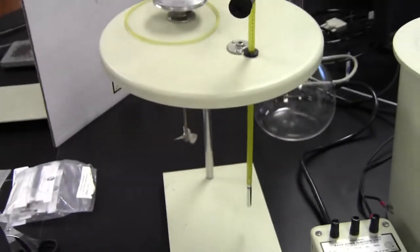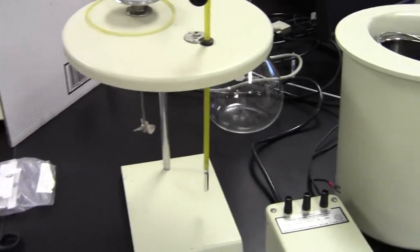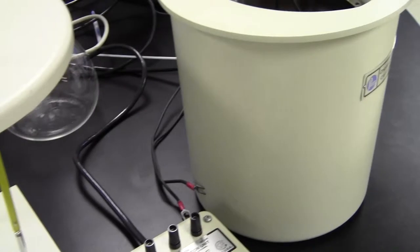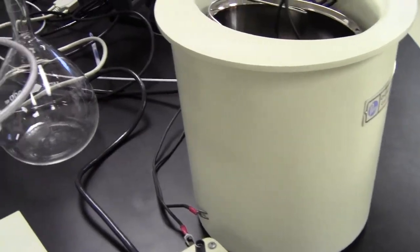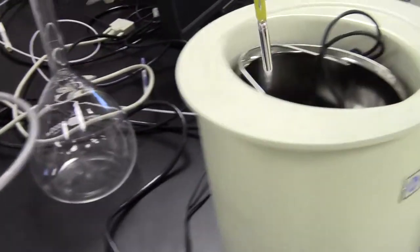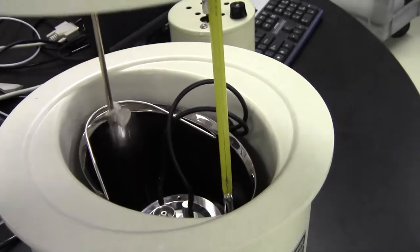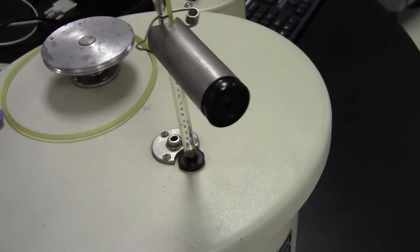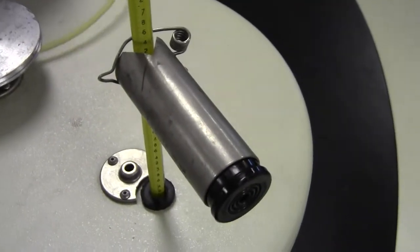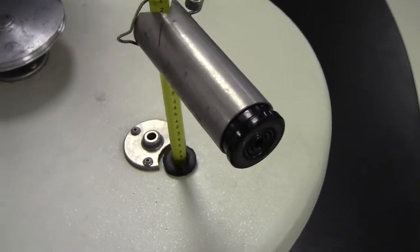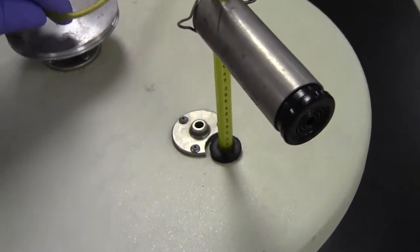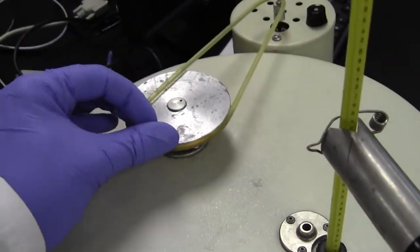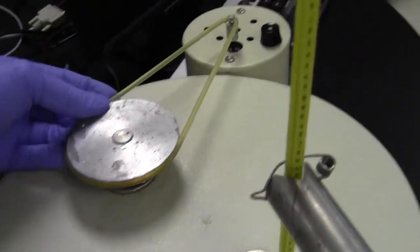So the lid also sits in its own stand to protect the thermometer from breaking. We'll lift it out of its stand and bring it over, and it will go on only one way. And that's good, and you'll just secure this. I'm trying to do it with one hand here. There we go.